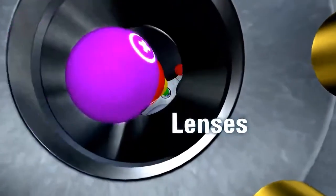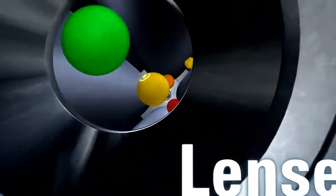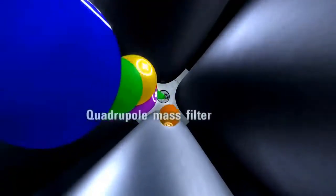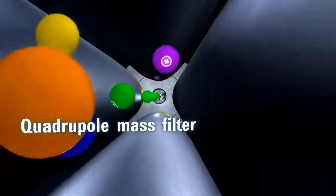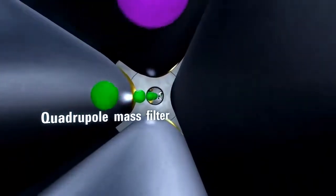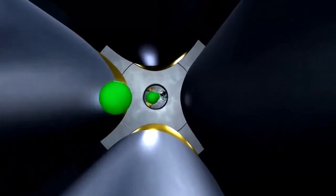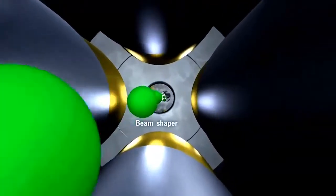Patented lenses enhance high-mass ion transmission and increase sensitivity over a wider mass range. The first quadrupole mass filter allows only ions of the target mass to pass through. The hyperbolic shape of the rods enhances ion transmission and spectral resolution.